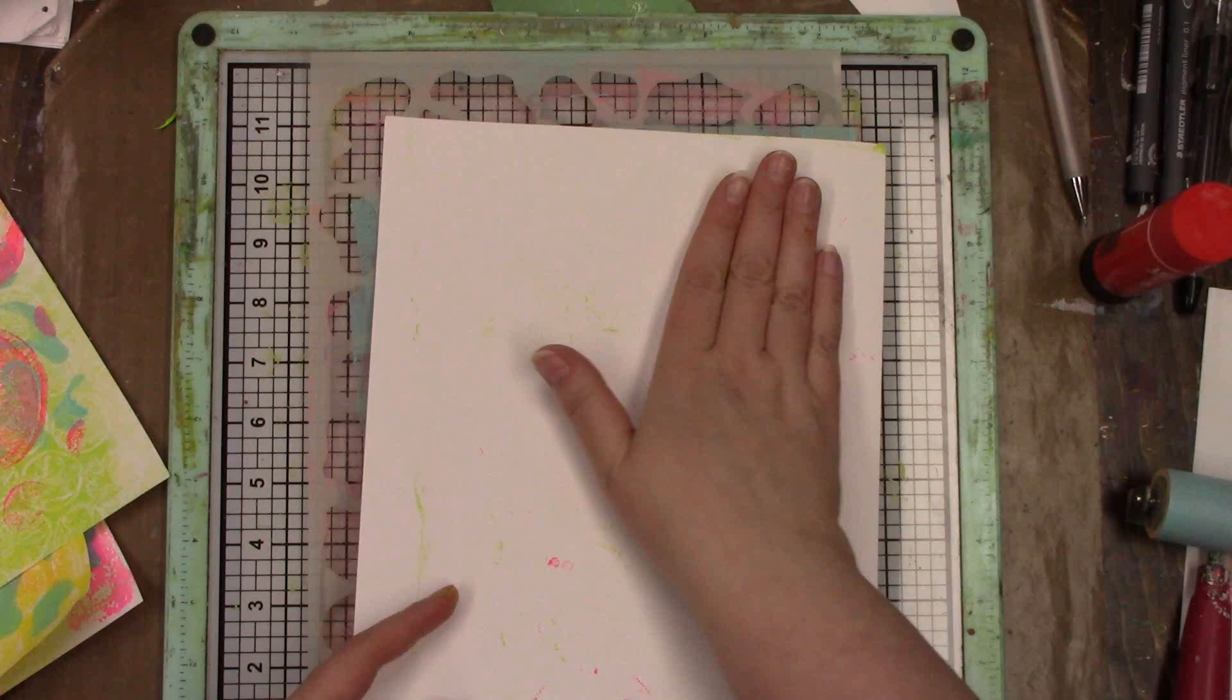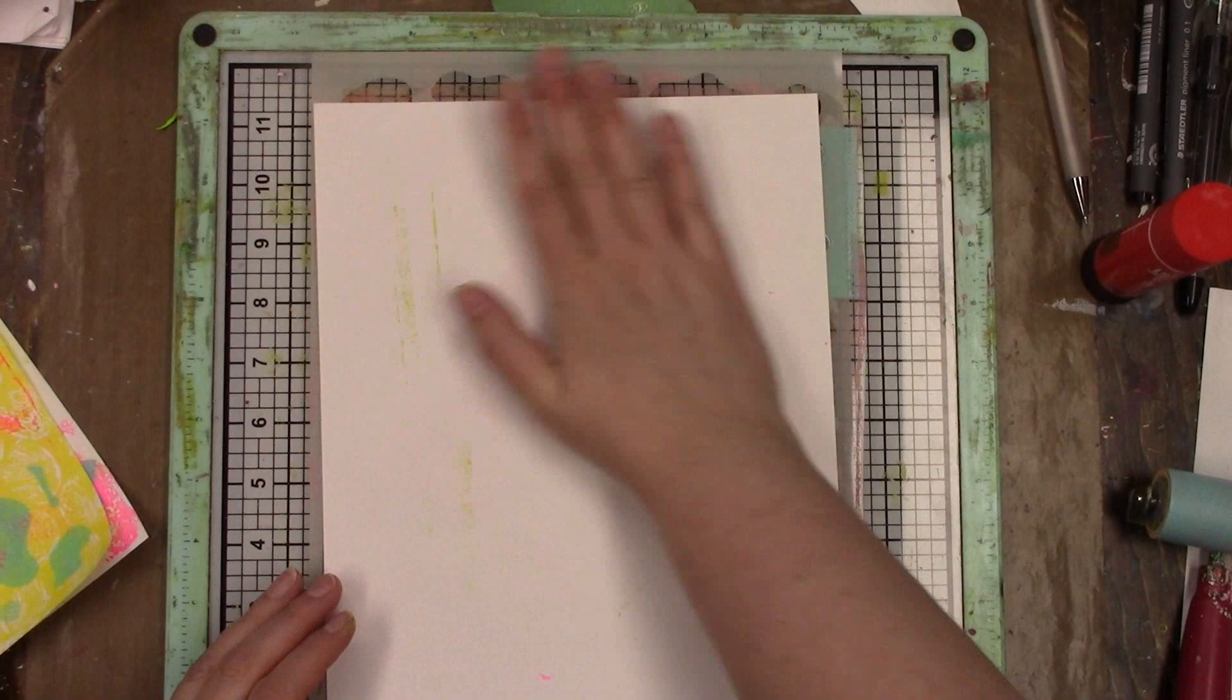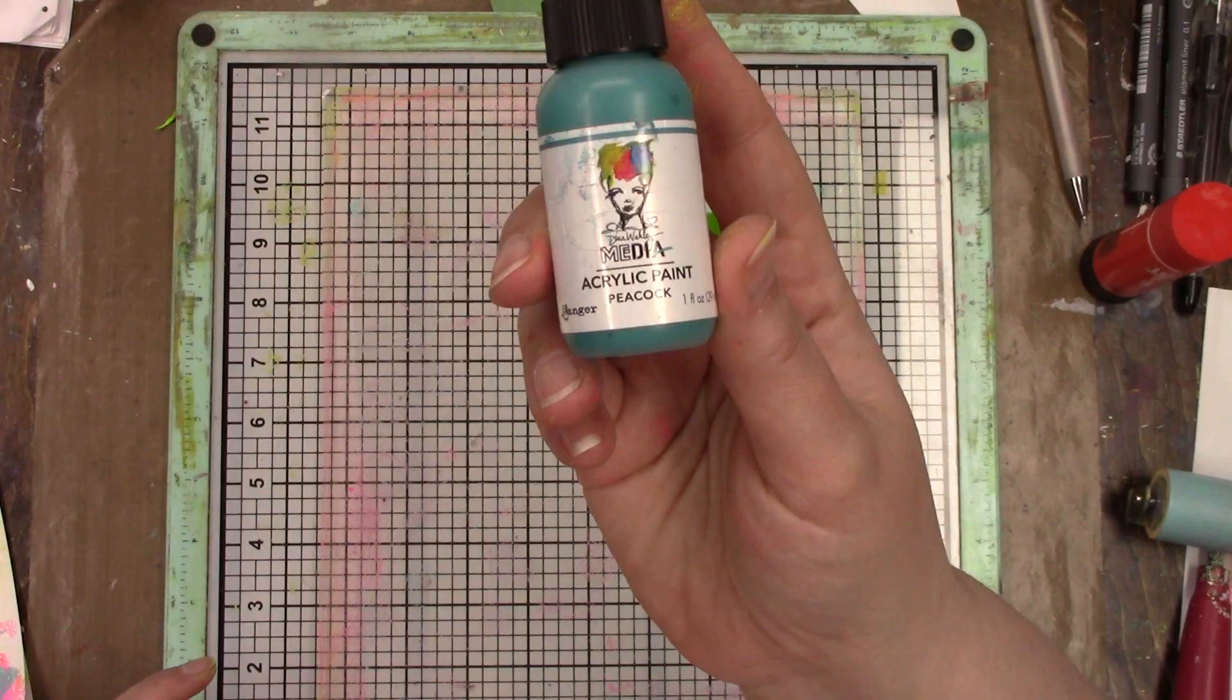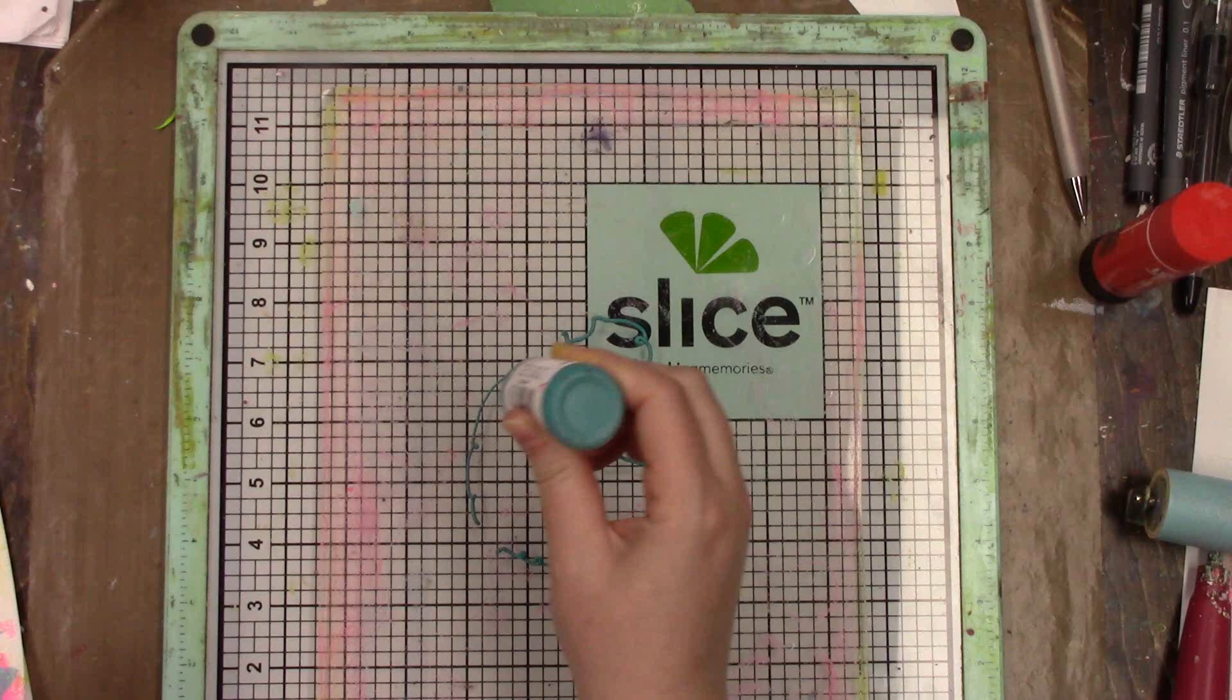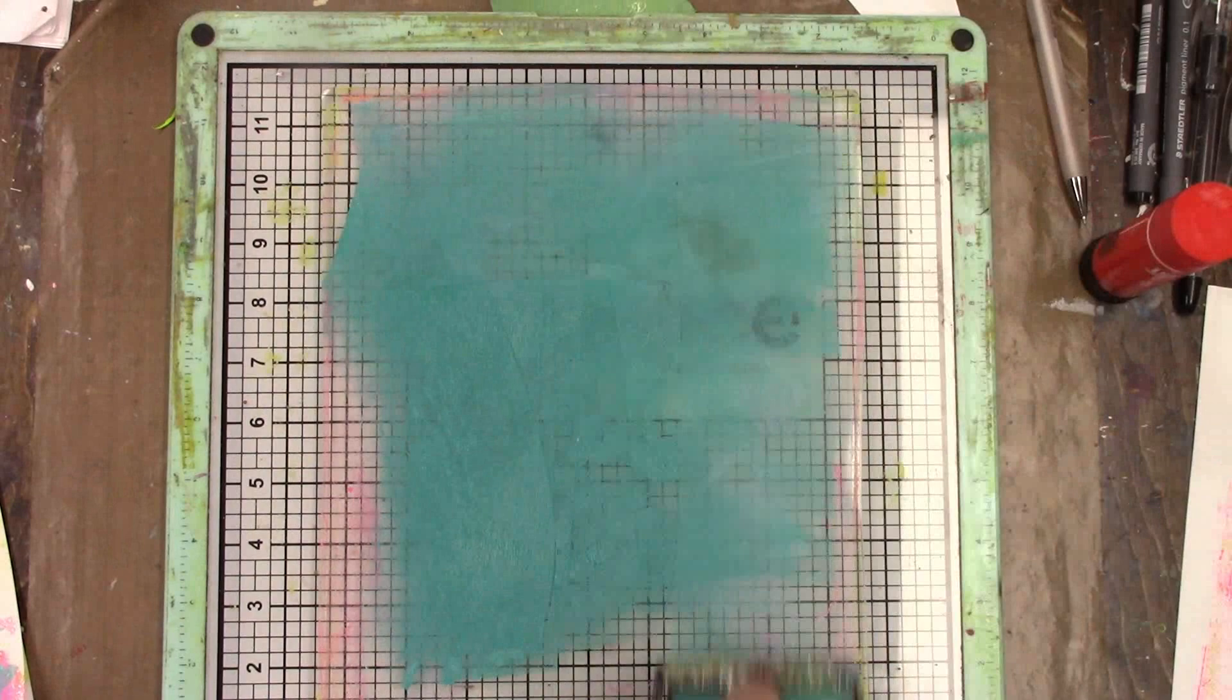When you're doing the background you don't need to be picky and precise about where your pattern is going, because it's just a background. You're just creating something pretty for the background. It's not going to be your focal image, but you want it to look nice. It doesn't have to be in a particular pattern or design.